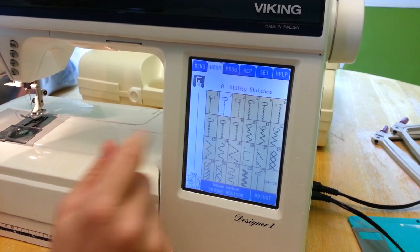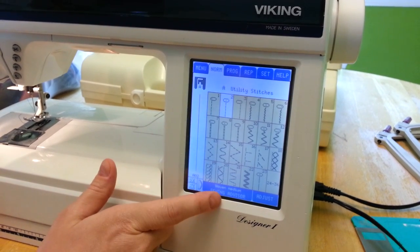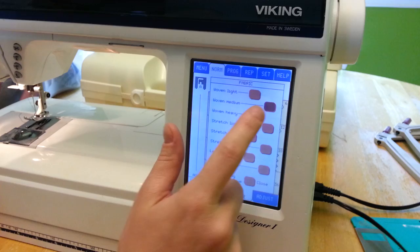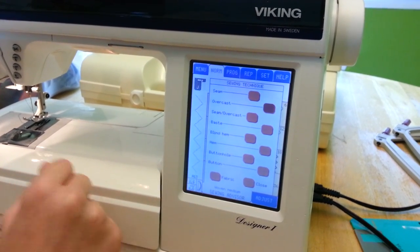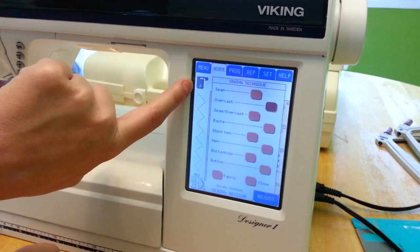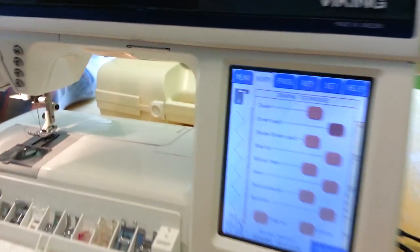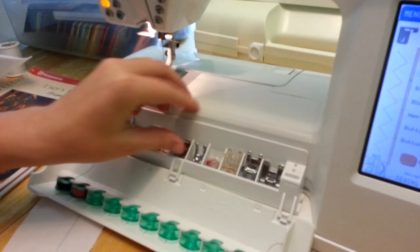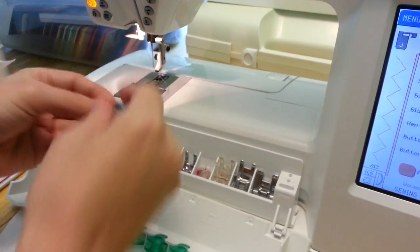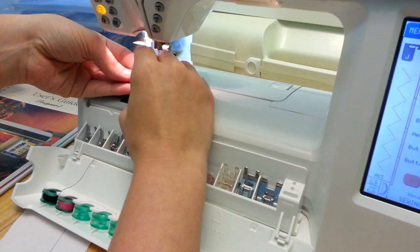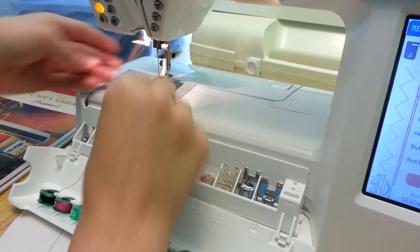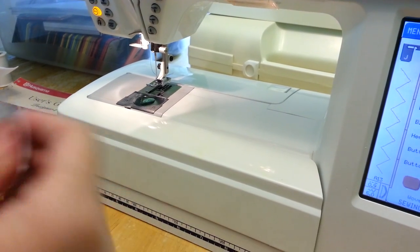I'm going to select A again. I'm going to select this one, but I'm going to do the sewing advisor. I'm going to say we have a medium weight and we're going to do an overcast. Right here it changes and it tells me what foot that I need to get. So I'm going to slide off the A. I'm going to slide on the J. Real quick, I'll show you.